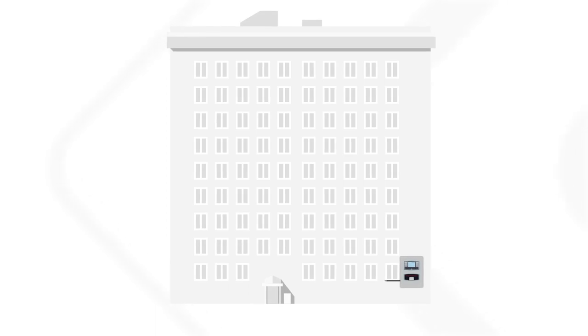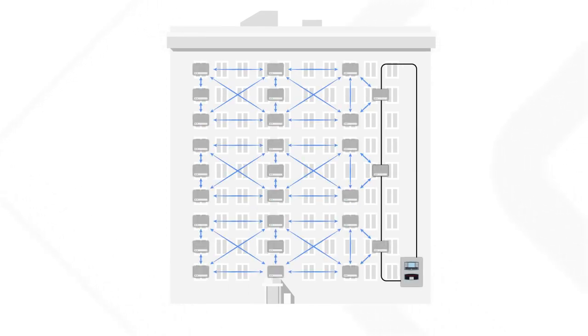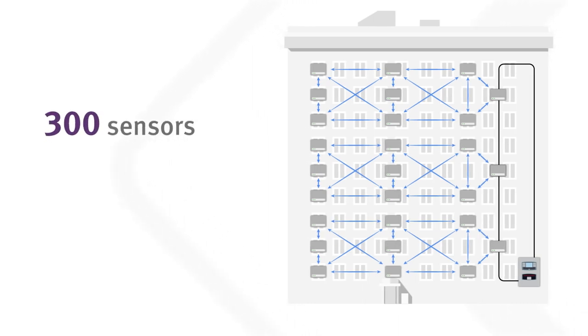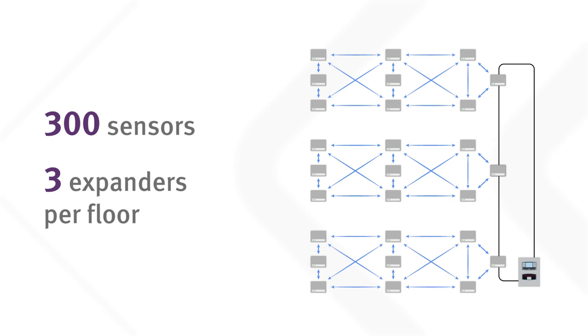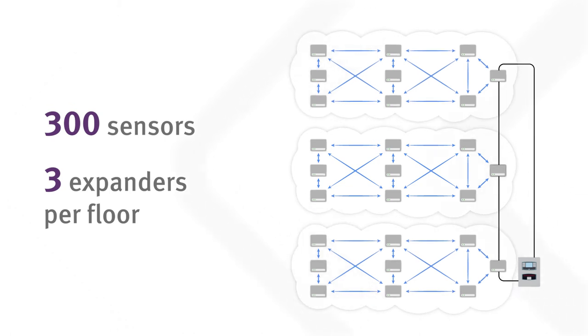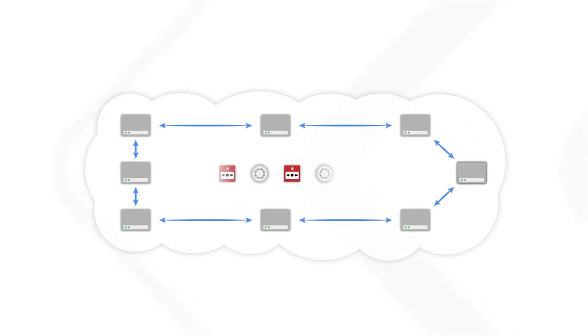To illustrate this point, let's look at a wireless system installed in a nine-storey building. The system contains 300 sensors and three expanders per floor. All devices are divided into three networks controlled by separate translators. This amount of network nodes is sufficient to provide each device with multiple communication paths.